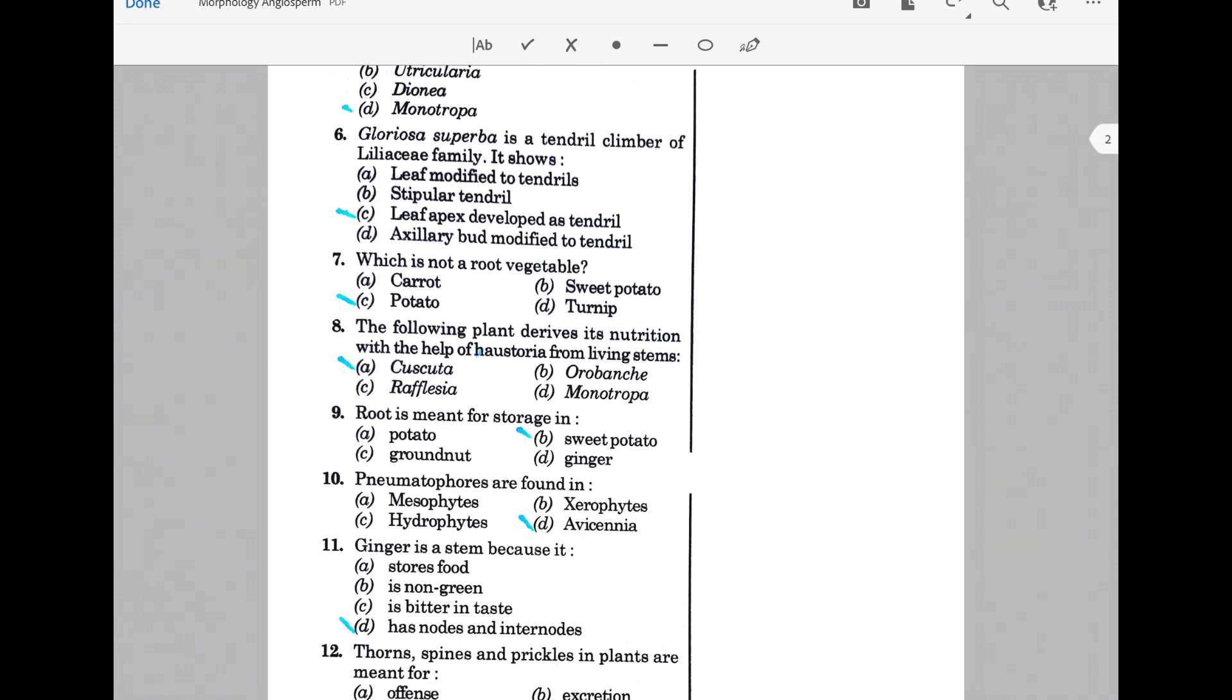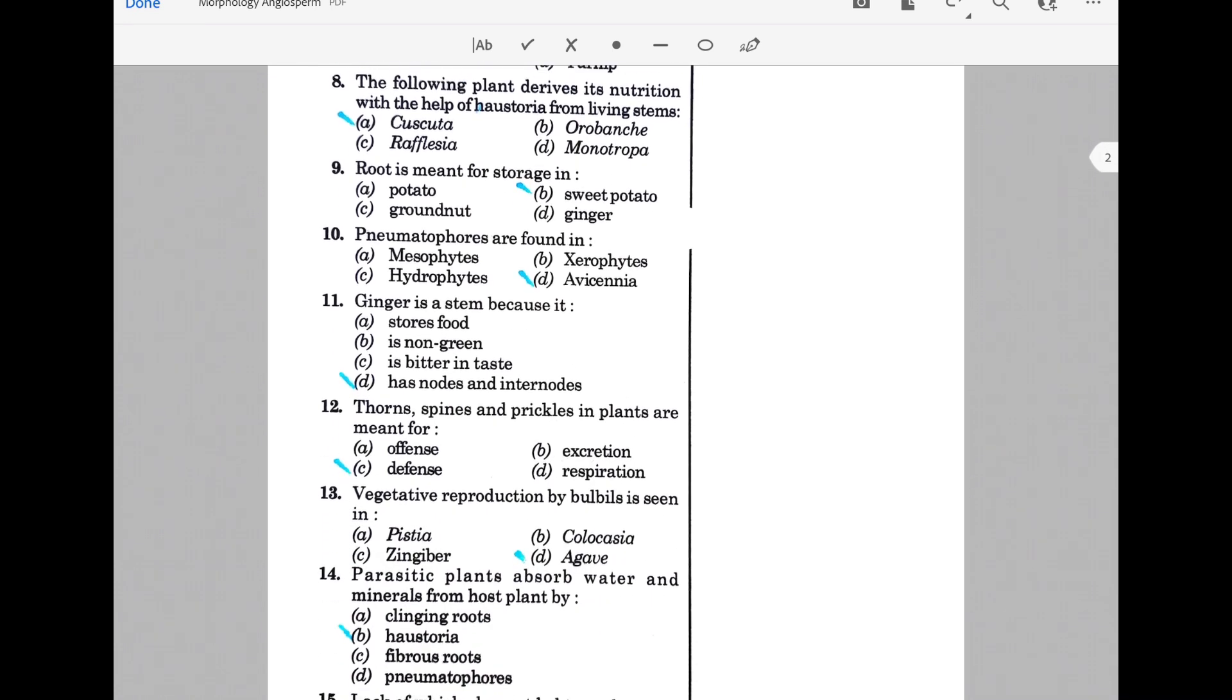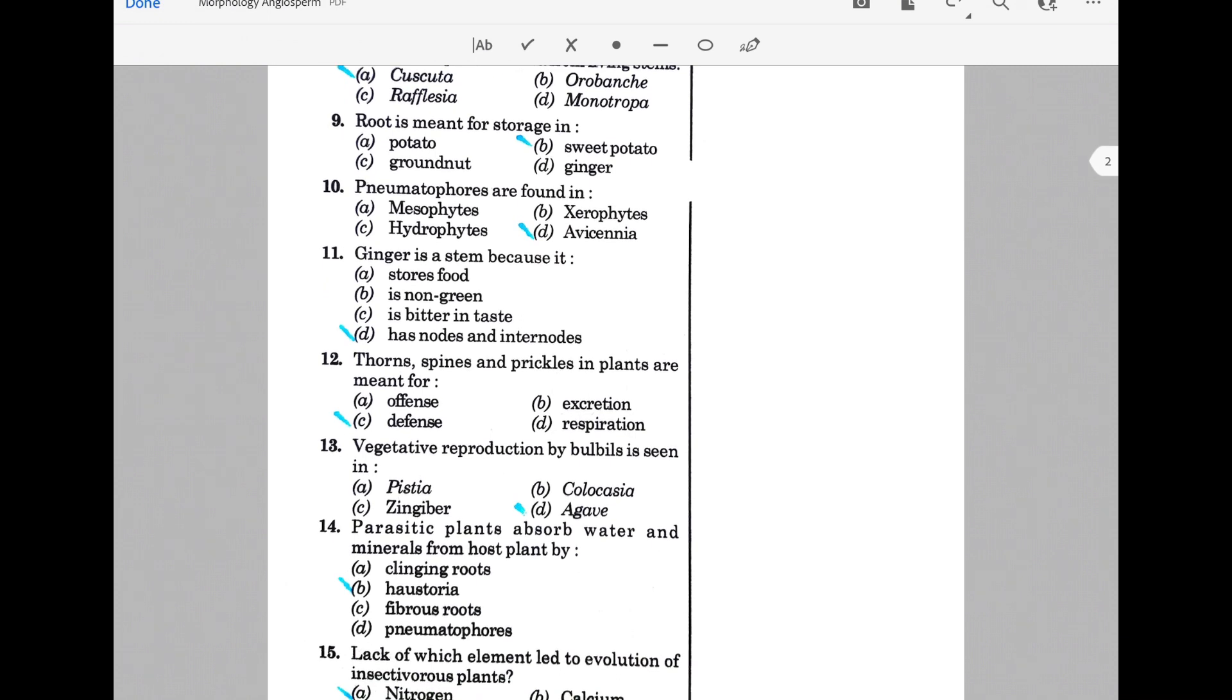Pneumatophores are found in Avicennia. Avicennia is found in delta regions or marshy areas, and pneumatophores help in respiration purposes. Ginger is a stem because it has nodes and internodes. Thorns, spines, and prickles in plants are meant for defense purposes.